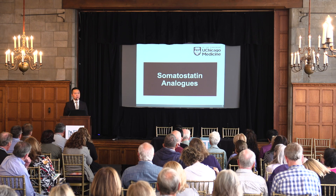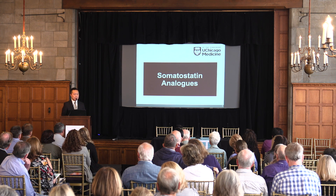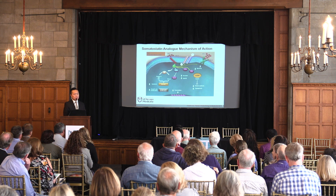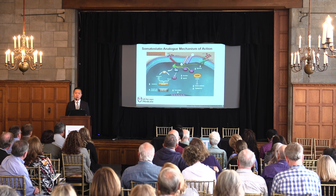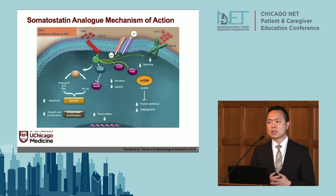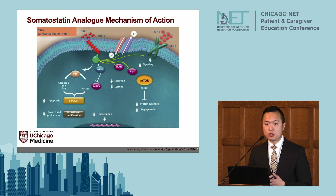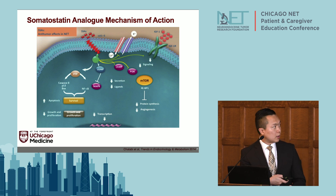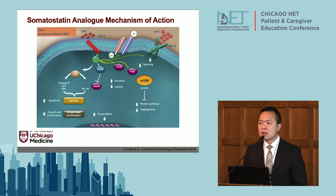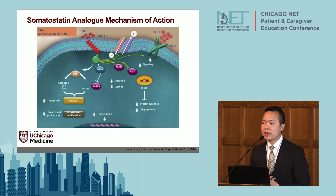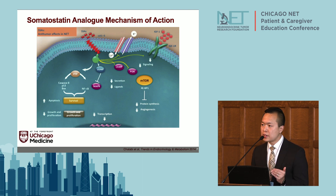The first category of systemic therapies we're going to talk about are the somatostatin analogues. These are treatments that mimic somatostatin, which is a hormone that your body produces, and they bind to receptors on the tumor cells called somatostatin receptors. Not only are they beneficial in controlling some of the hormonal symptoms of neuroendocrine tumors, they have also been shown to stop tumor growth. When the drug binds to the receptor, an intricate and complex cascade of reactions happen within the tumor cells that ultimately lead to stopping tumor growth, cell death, and inhibiting the tumor from growing and invading.